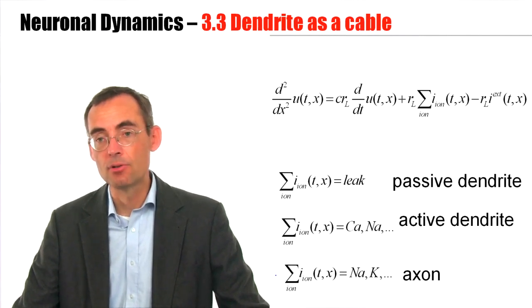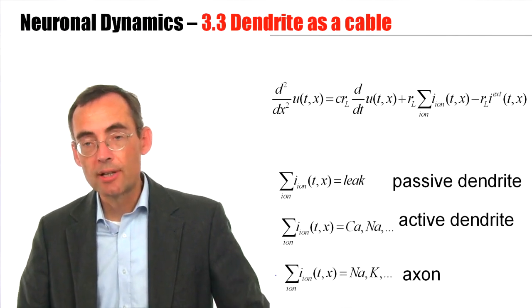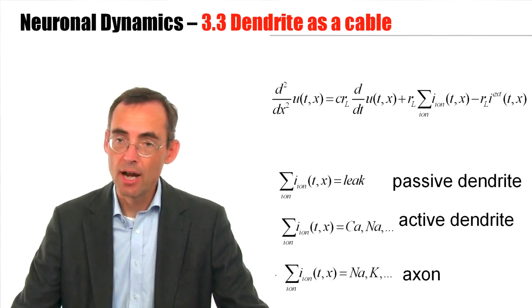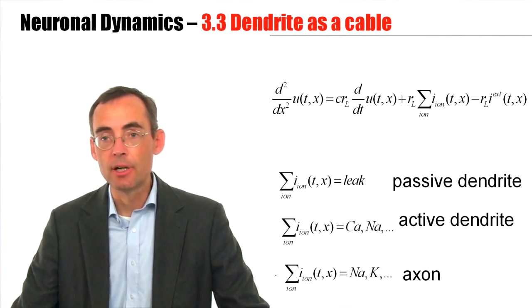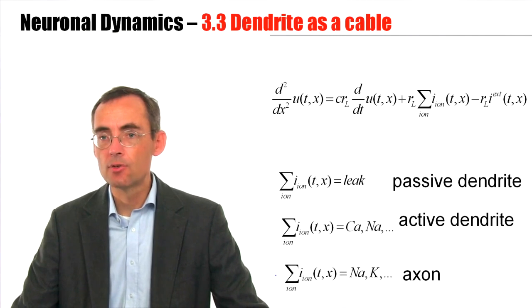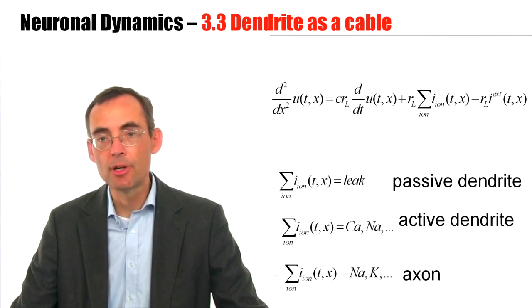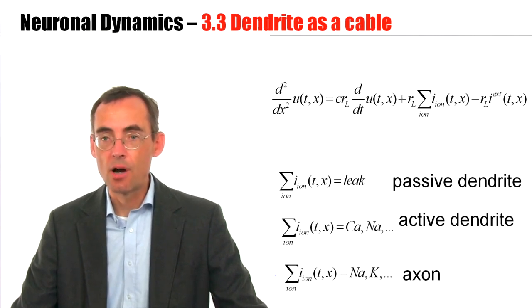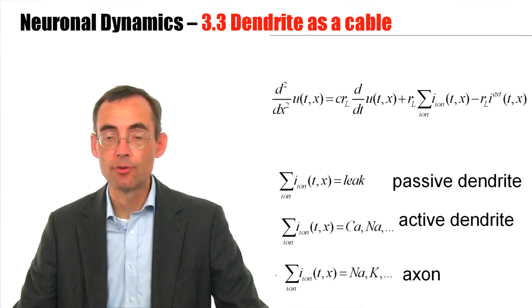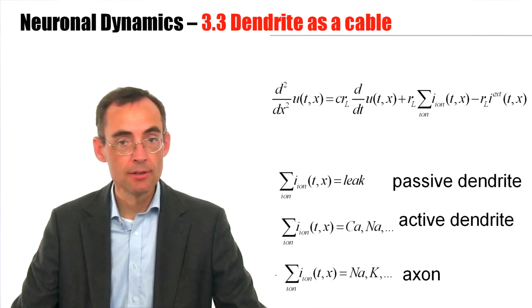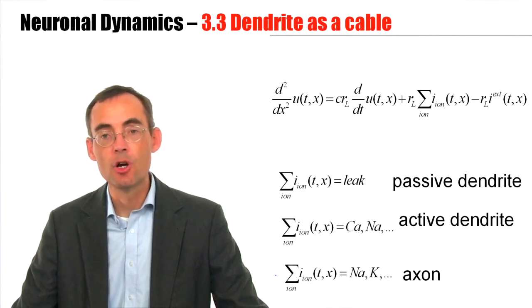The same type of cable equation can also describe the spread of an action potential, the traveling of an action potential in an axon. The cable equation is in fact nothing special to neuroscience. The cable equation is a well-known equation from electricity and describes the spread of electric current in all sorts of cables. Natural ones like neurons or artificial ones like you have in your home. Please take a few minutes to look at the quiz before we continue with the next part.